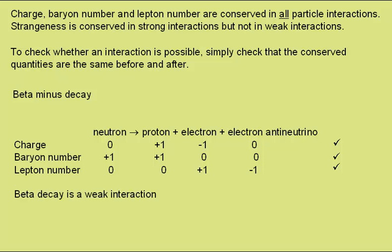Beta decay is a weak interaction and so strangeness would not be conserved. However, all the particles involved in beta decay have zero strangeness.